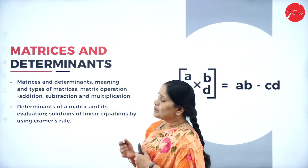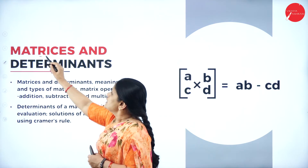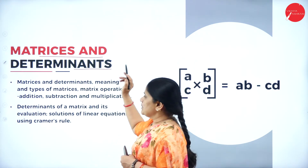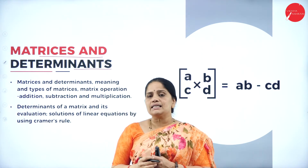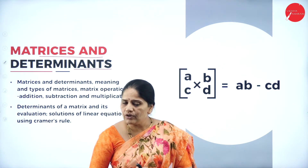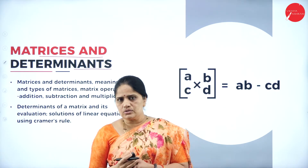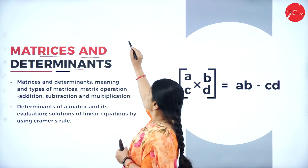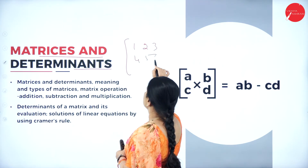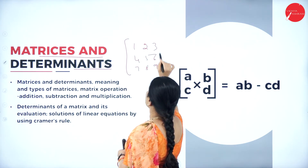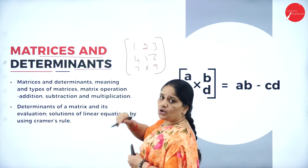In the next fourth unit, we will be having a study of matrices and determinants. A matrix is nothing but an arrangement of numbers in rows and columns. Suppose I write 1, 2, 3, 4, 5, 6, 7, 8, 9 — this is an arrangement of numbers in rows and columns.